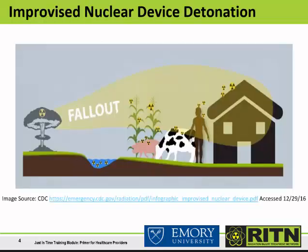An improvised nuclear device, or IND, is a type of nuclear weapon. When it detonates, it gives off four types of energy: a blast wave, intense light, heat, and radiation.